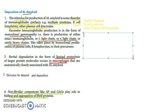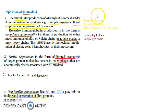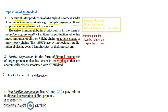What is produced includes lambda light chain, kappa light chain, and sometimes even heavy chains — though heavy chains are rare. So the stimulus is multiple myeloma, B-cell lymphoma, or other plasma cell dyscrasias, and what is produced are immunoglobulins like lambda light chain, kappa light chain, and sometimes heavy chains.